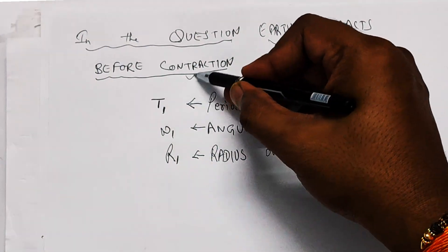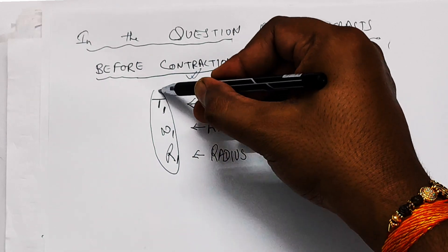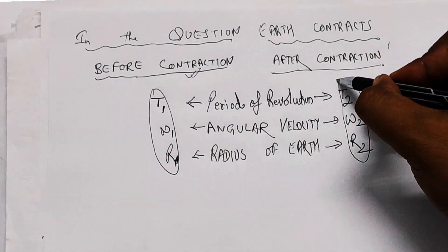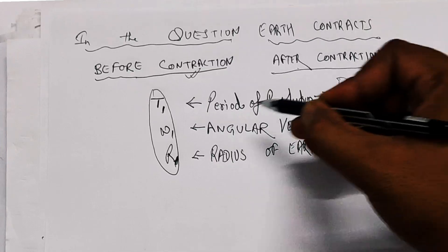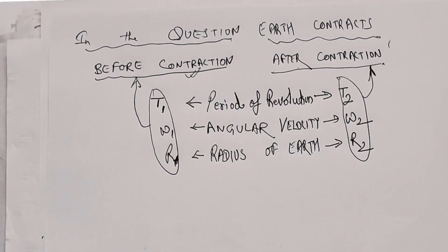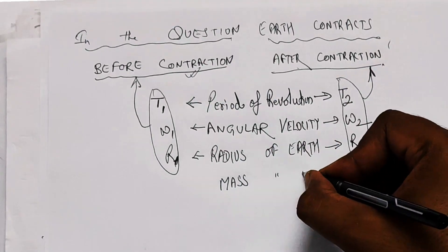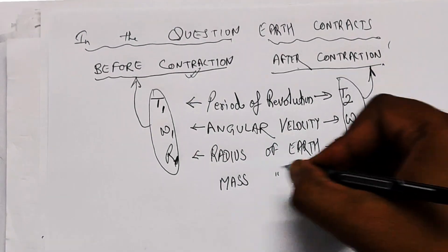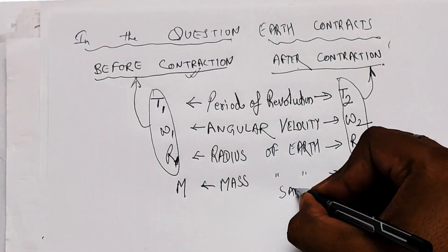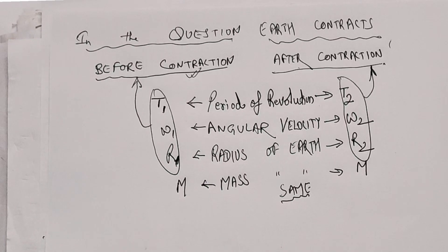Here, T1, omega1, and R1 are the values of the earth before contraction, and T2, omega2, and R2 are the values of earth after contraction. T1 is the period of revolution, omega is the angular velocity of the earth, and R1 and R2 are the radius of the earth before and after contraction.